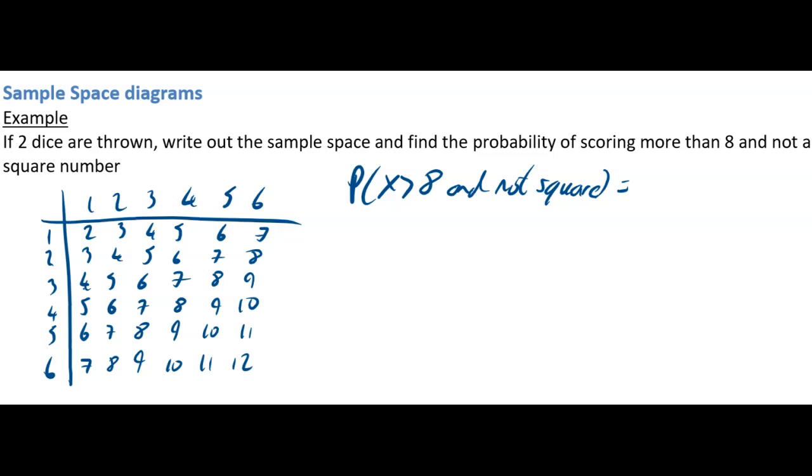So greater than 8, you've got 9, 9, 9, and 9. You've got 10, 10, 10. You've got 11, 11, and 12. But all of those 9s are also square numbers. So it's just that 10, 10, and 10, 11, 11, and 12.